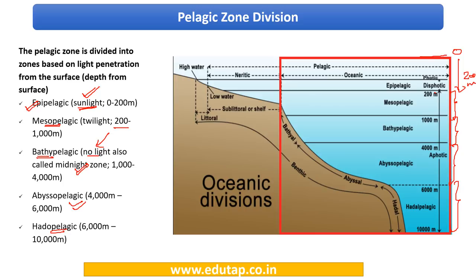Just remember these names — they may be used many times when referring to various fishes. When we say pelagic zone, we can immediately relate that fishes found in the water column of an ocean are referred to as pelagic fishes. We shall see further divisions in another video.